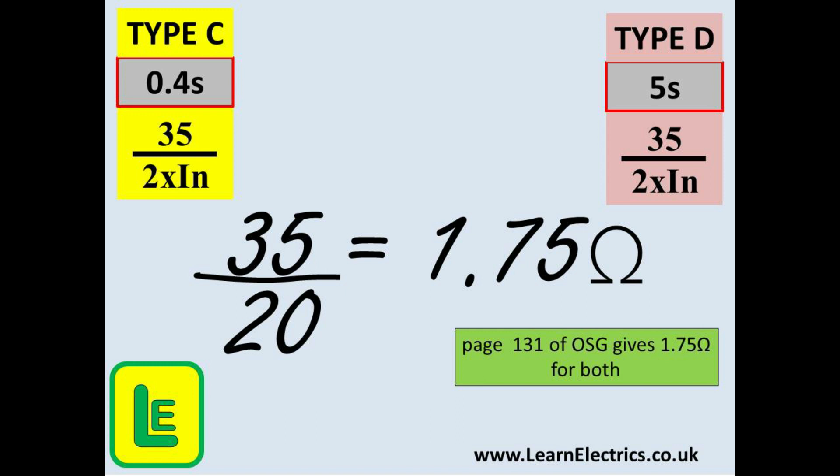Now we are going to make a slight deviation from the 0.4 second disconnections. Type D circuit breakers are often used in distribution circuits in industrial settings. Here they are protecting a feed from a distribution board to another board or a consumer unit further down the line. The disconnection time now is 5 seconds. So for a type D breaker and a 5 second disconnection time we divide 35 by twice the size of breaker. Just as we did for the type C in the last example. This gives us a calculation of 35 divided by 20 and the result is 1.75 ohms. And you can see the comparison at the top of this slide.